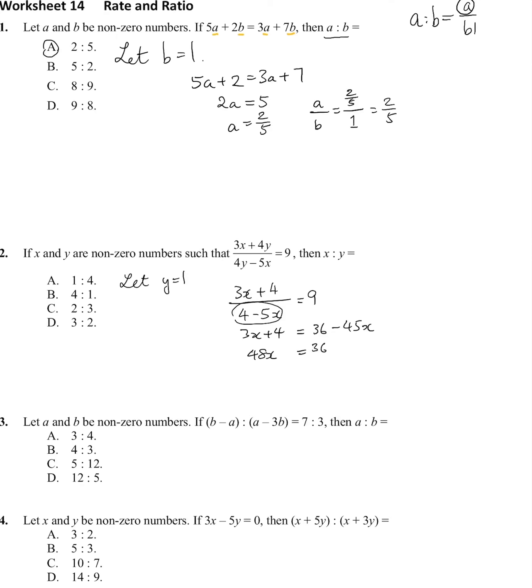36 minus 4 which is 32, 32 divided by 48 to make x. You can simplify this by the multiple of 16, so it's 2 over 3. So it's 2 over 3 over 1, which is still 2 over 3, therefore the answer is C.